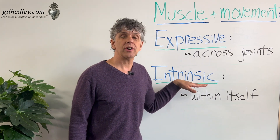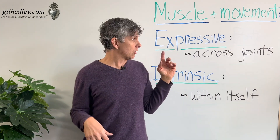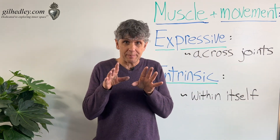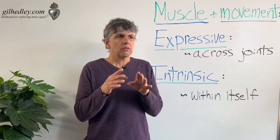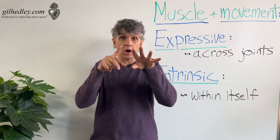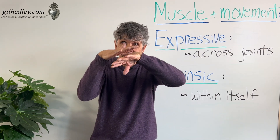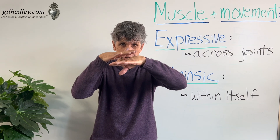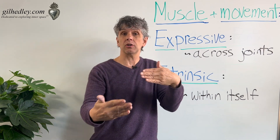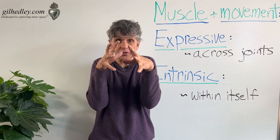Muscle movement also has an intrinsic quality. Intrinsic kind of means an inside quality. So in order for that across-the-joint movement to happen, there has to be more microscopic movements of the tissues. For instance, if we have two named muscles next to each other going in different directions in a given behavior acting on their mutual joints, they have to shear and slide relative to each other. That type of movement is very different from the contraction of the fibers across the joint making your bones go through space. This movement is intrinsic, meaning inside the muscle layer.